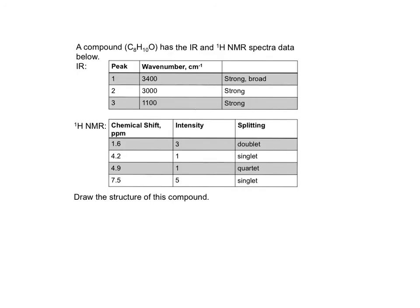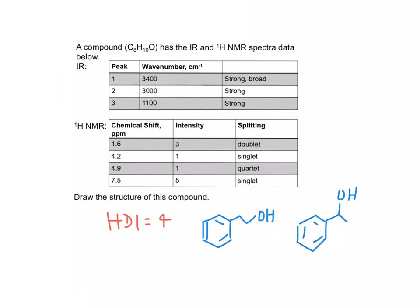Here's a combination of IR and proton NMR. Stop the video and try to predict the structure of this compound. Based on the chemical formula, the HDI of this compound is equal to four, meaning there are four pi bonds, four rings, or a combination. Here are two possible structures, and it turns out that the structure that best fits the IR and proton NMR data is this one.